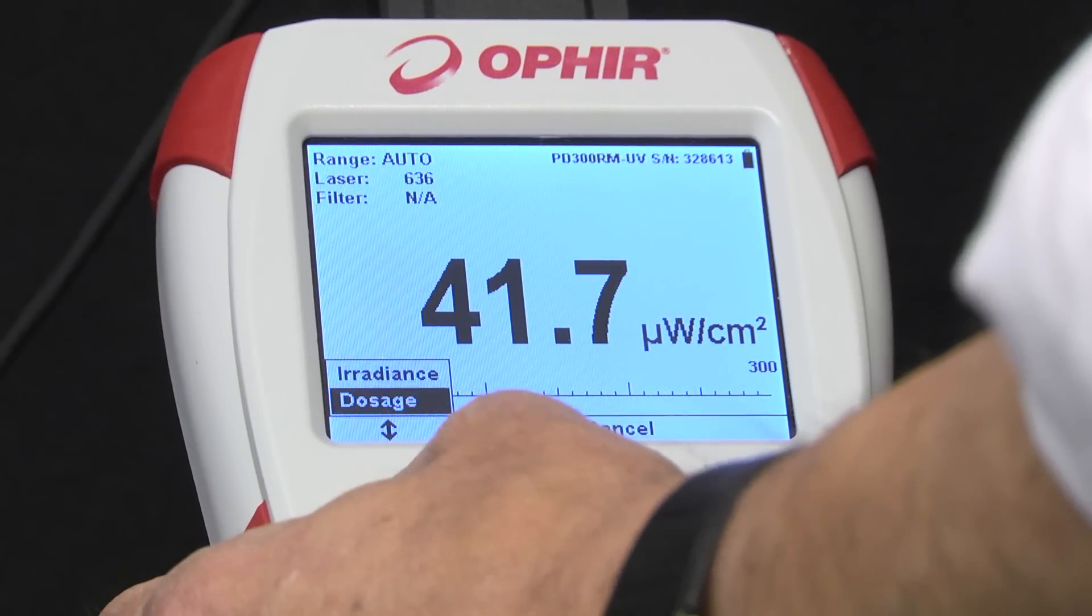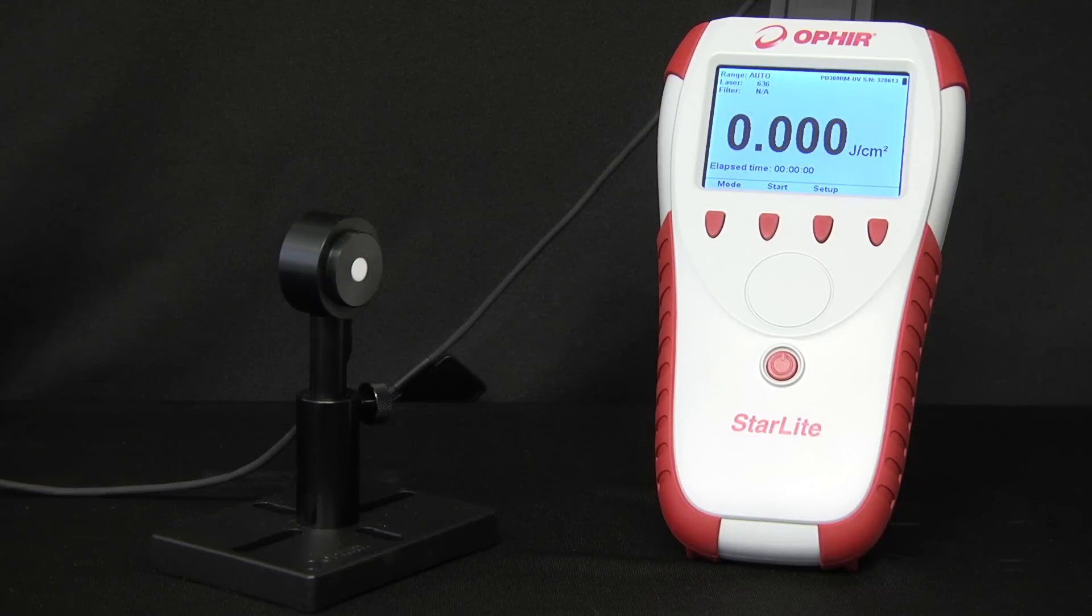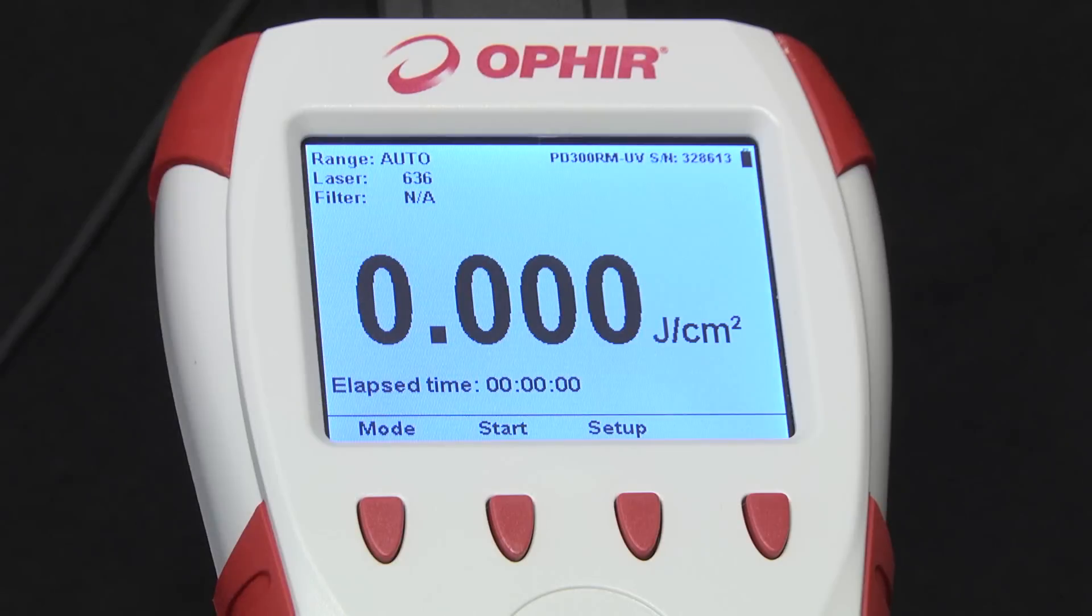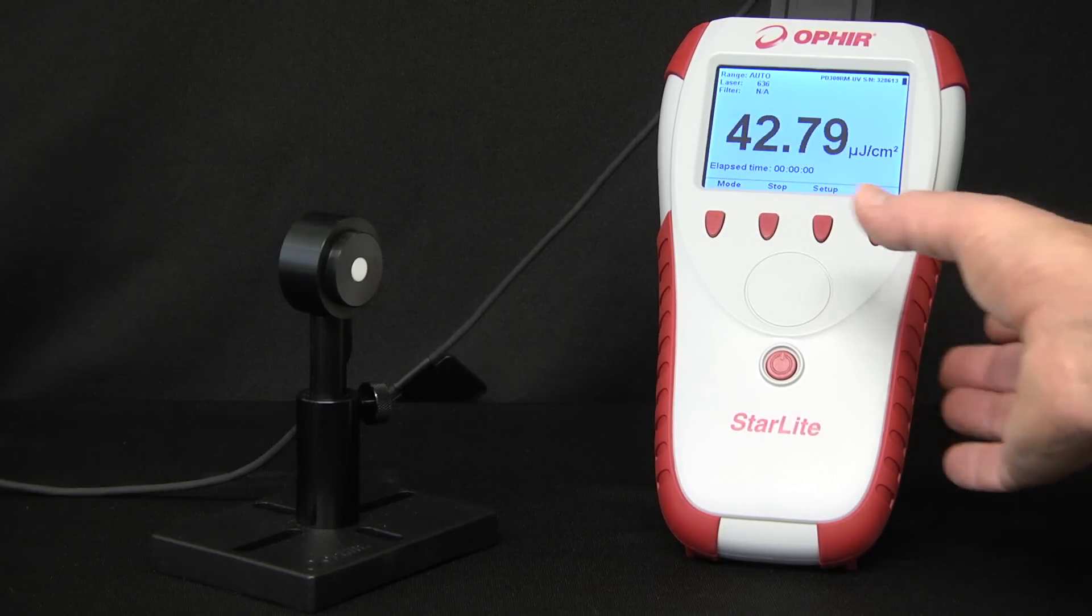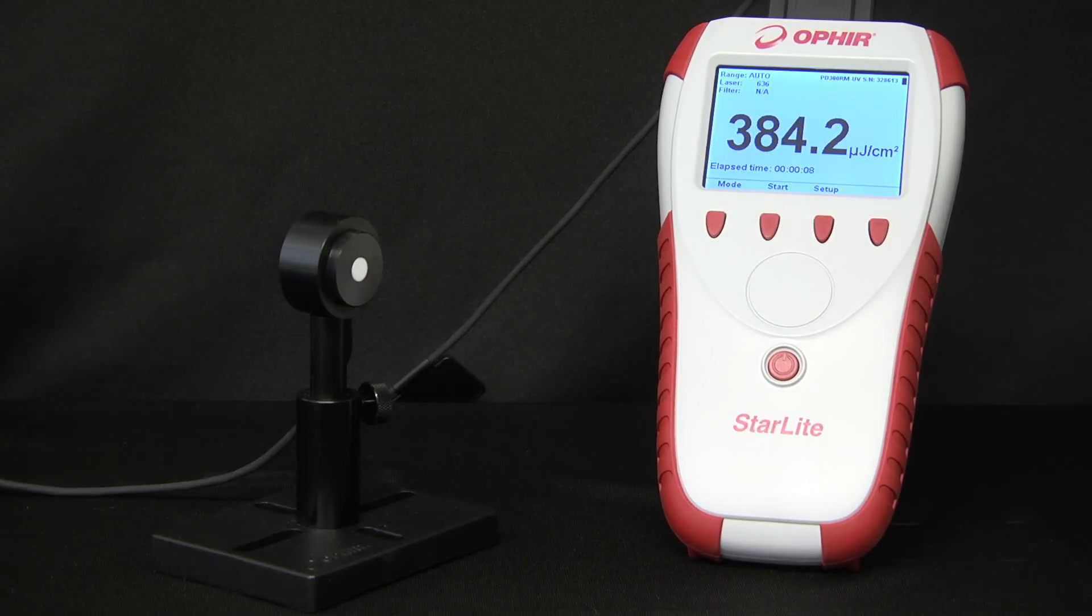In dosage mode, the PD300RM measures total accumulated dosage of energy per unit area in units of joules per square centimeter over a given time period. You press start to begin. An accumulative dosage is shown as the measurement progresses. You then press stop to end.